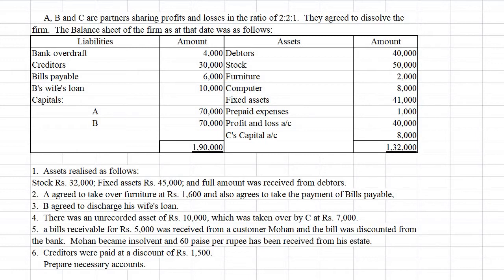We will get only rupees 3,000 from the insolvent customer, but we have to pay the bank rupees 5,000 because we already discounted that bill with the bank. Since the customer cannot pay, we have to pay the bank rupees 5,000. Creditors were paid at a discount of rupees 1,500 — creditors of rupees 30,000 were settled for rupees 28,500. Let us start with the solution.